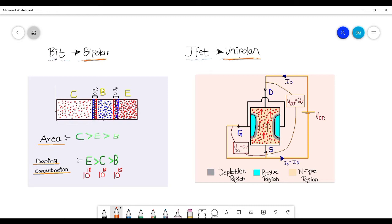I had explained the meaning of bipolar earlier, but for those who are new I will explain again. As you can see here, this is an internal structure of BJT and this is the internal structure of JFET.